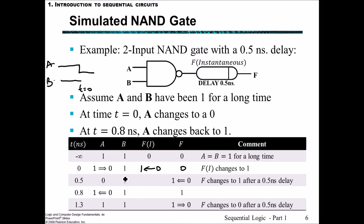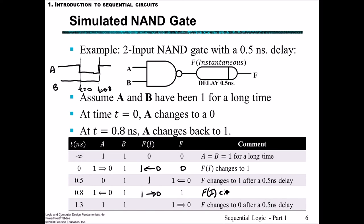After 0.5 nanoseconds, F has now changed from 0 to 1. Then after 0.8 nanoseconds, A changes back from 0 to 1 — F_instantaneous immediately changes back to 0, but F still stays at 1. After a further 0.5 nanosecond delay, F catches up and changes from 1 to 0. As time continues with A and B both at 1, F_instantaneous stays at 0 and F is most definitely 0 again.